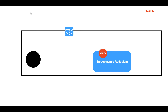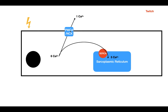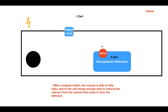During the experiment, one single stimulus caused calcium to flow into the cell. To fully relax the muscle, you have to remove all the calcium that came in. The SERCA pump removes the majority of the calcium, while the PMCA and NCX remove the rest. It takes a certain amount of time to do this, so it takes time for the muscle to fully relax. With a single muscle twitch, the cell has enough time to remove all calcium from the cytosol.